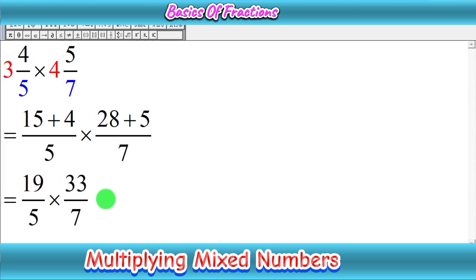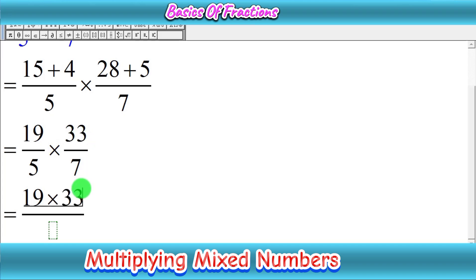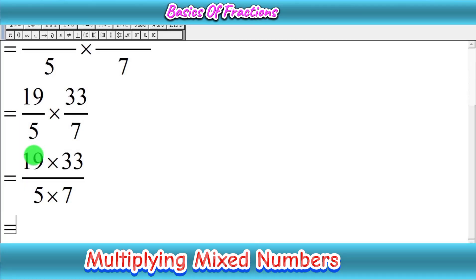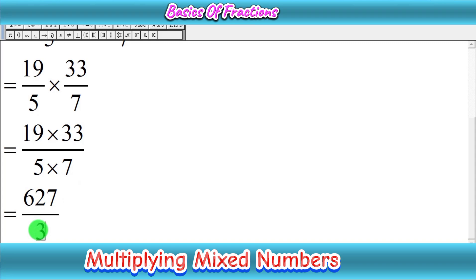Now we multiply straight across — numerator times numerator and denominator times denominator: 19 times 33 divided by 5 times 7. Multiplying 19 by 33 gives 627, and 5 times 7 is 35. So we have the improper fraction 627 over 35.